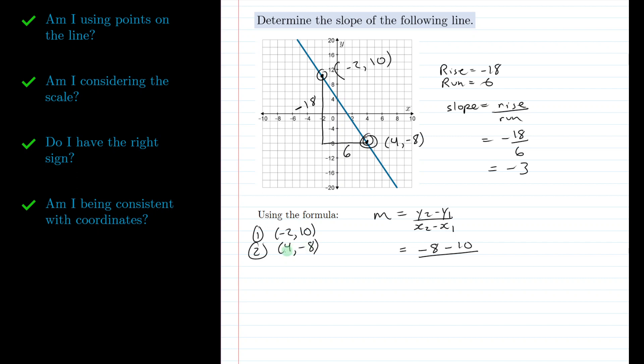This is point 2. So when we talk about x₂ it should be the x value for point 2. So make sure you do 4 minus (-2) not the other way around. Okay and anyway that gives us -18 over 6 which as we've seen is -3.